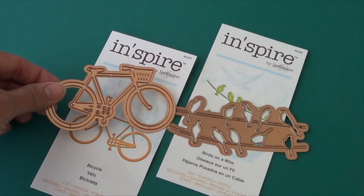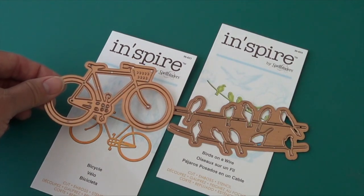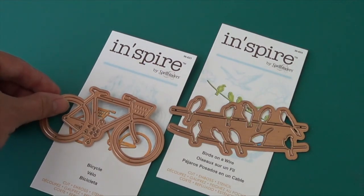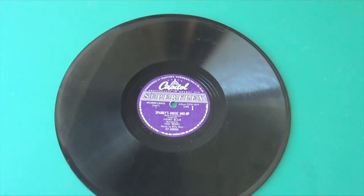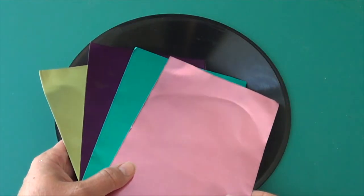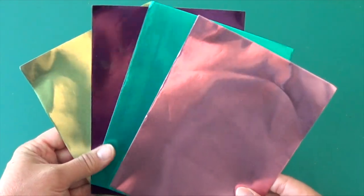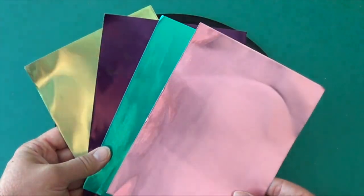This is a totally adorable new line of dies called Inspire. They have lots of really cute trendy images like this little bicycle. I found an old record from the salvage store and it turned out to have just the right circumference that I needed to fit 12 bicycle wheels. We're going to die cut those from Spellbinders craft foils.